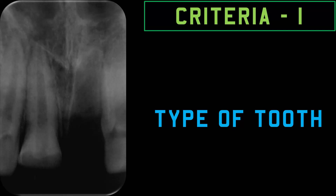I follow the following criteria before choosing the first file. First, I look at the type of tooth — whether it is a central incisor, canine, premolar, or molar. If it is a single-canal tooth, it will always have a wider canal. If it is a multi-rooted tooth, it will always have a smaller-sized canal.